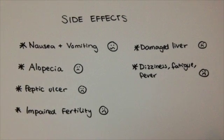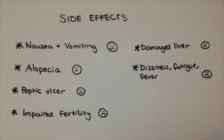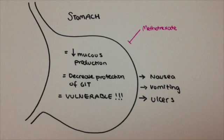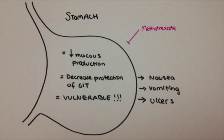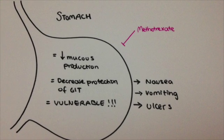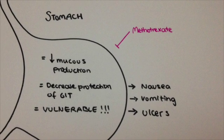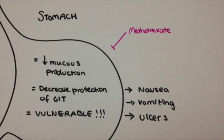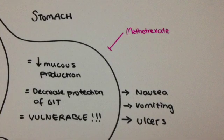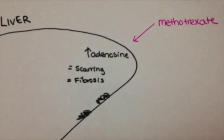Some of these side effects are the same as those found through the use of chemotherapy, because methotrexate in high doses is actually used in chemotherapy. The gastrointestinal side effects are caused by methotrexate targeting rapidly turning over cells such as the stomach's epithelial mucosal cells. Apoptosis of these cells leads to a decrease in mucous secretion and thus a decrease in the protective layer of the stomach, which can lead to vomiting, nausea, and even peptic ulcers.